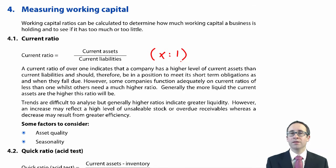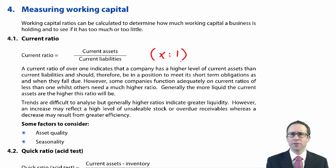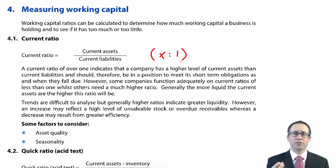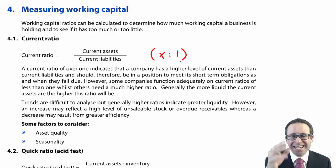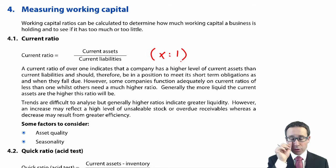When was the last supermarket you heard of that became illiquid and went bust? So the ratio may not tell the true picture. Be able to calculate it and accept that a supermarket has a ratio of less than one. Other industries, 1.6 to 1.7 tends to be the norm. If the ratio decreases from last year, that means we are a little bit less liquid — but don't forget to look at the cash balance, because cash is the key to liquidity. There are also some other factors to consider, including asset quality.